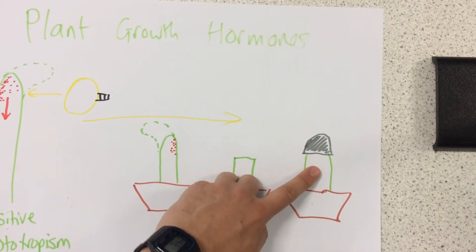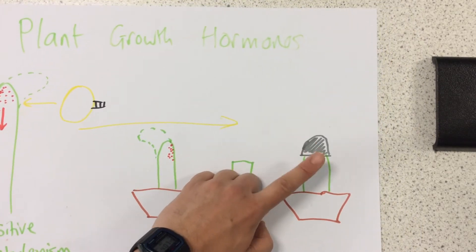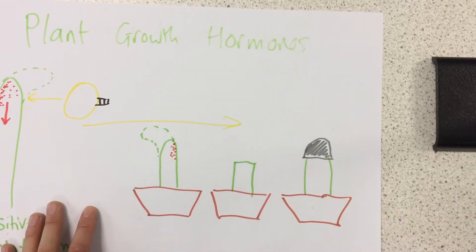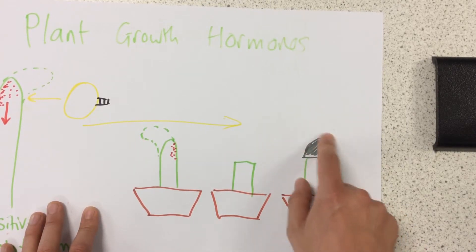Now this one, because it hasn't had the shoot cut off, it's still going to grow, because it's still going to be producing auxins. However, this one, because it's got the foil kind of hat on it, this one isn't going to be affected by the light.